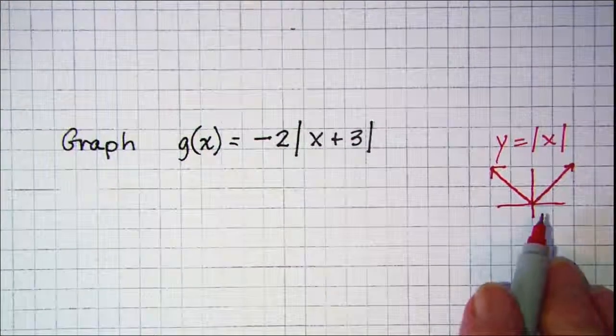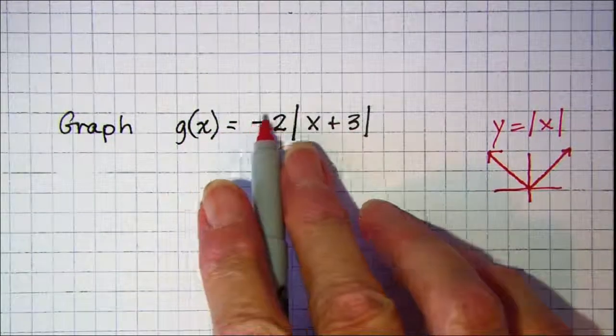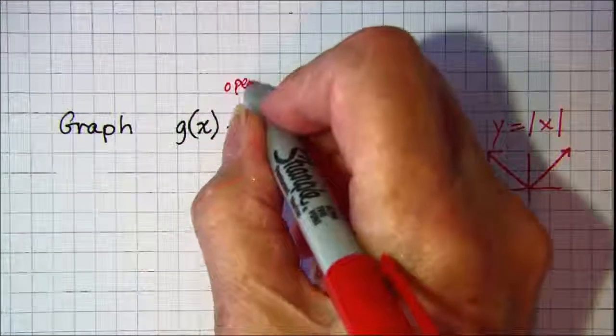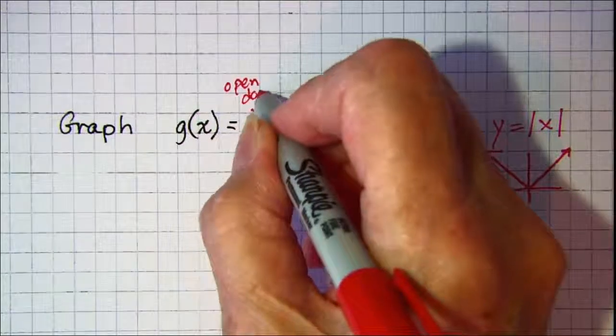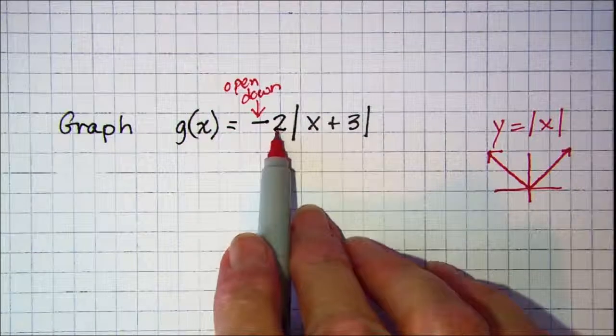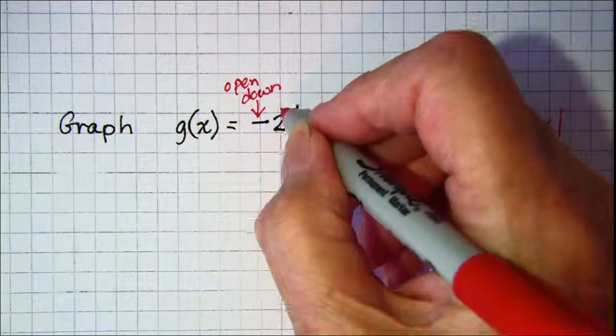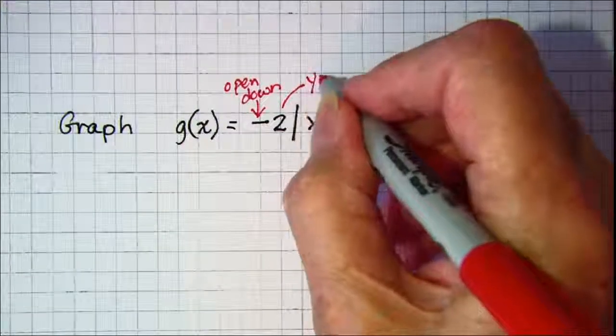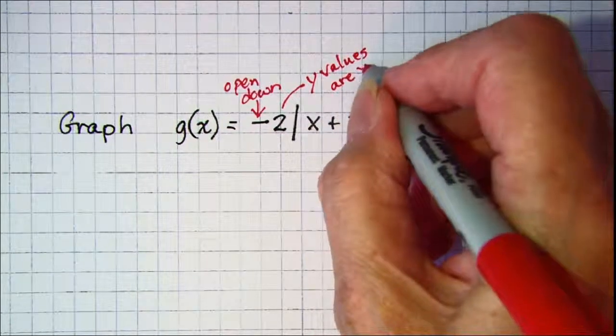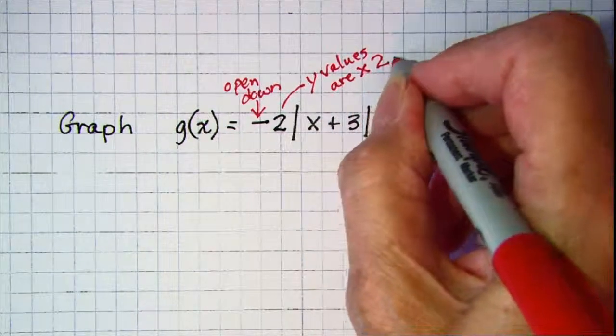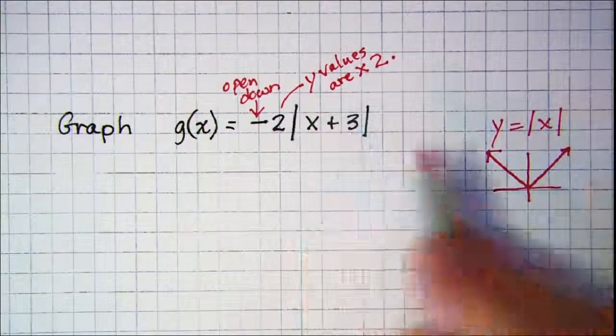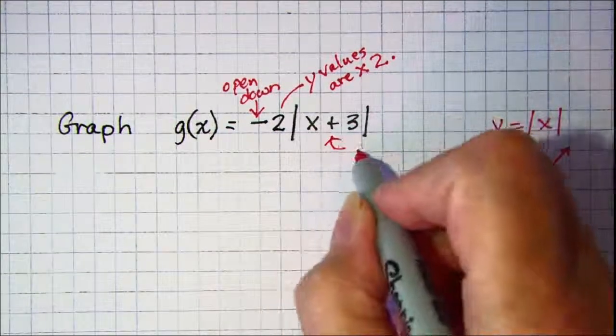So this is our basic graph and the transformations. The negative part says that it'll open down, and the 2 coefficient out in front means we're going to stretch the graph, so y values are multiplied by 2. And then this transformation, since this is inside the function, means we go left 3.